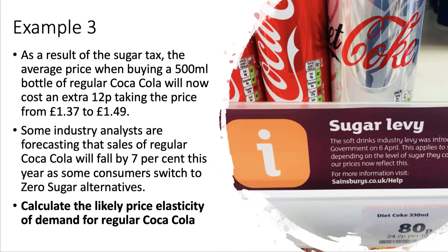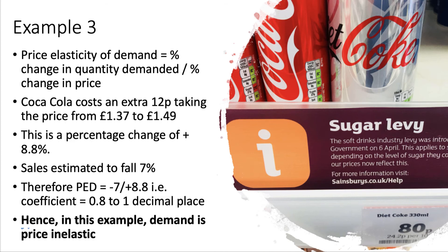Third example: the sugar tax. As a result of the sugar levy, the average price of a half-litre bottle of regular Coca-Cola will cost an extra 12p, taking the price from £1.37 to £1.49. Analysts forecast that sales of regular Coke will fall by 7% as some consumers switch to zero-sugar alternatives. The price change is 12p over the original £1.37, which is 8.8% to one decimal place. So it's minus 7 divided by plus 8.8.